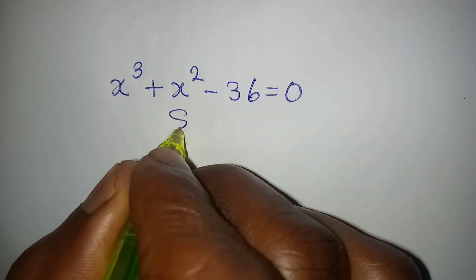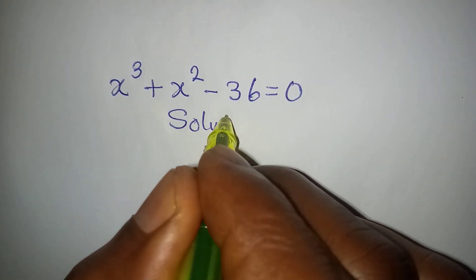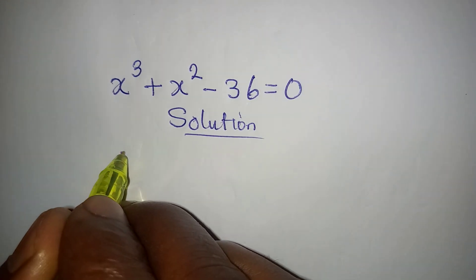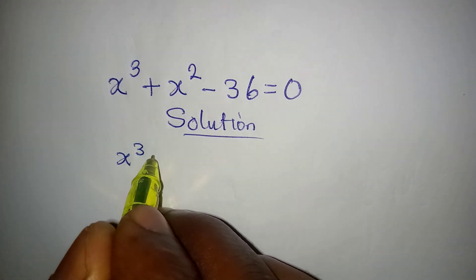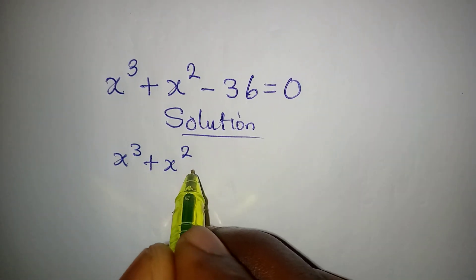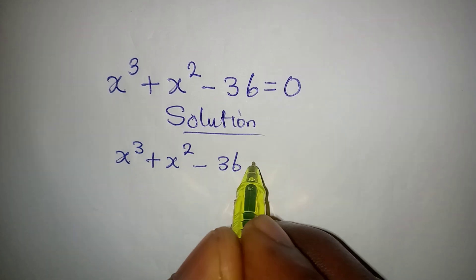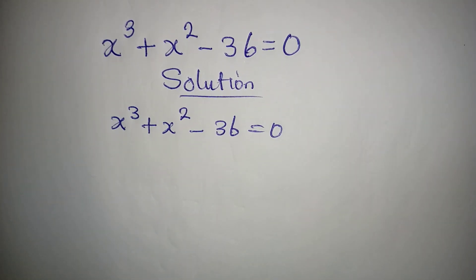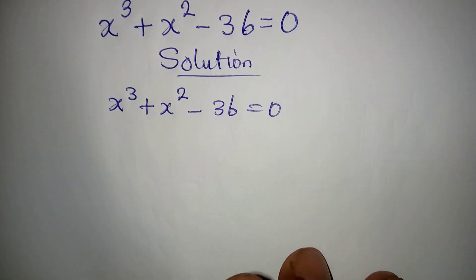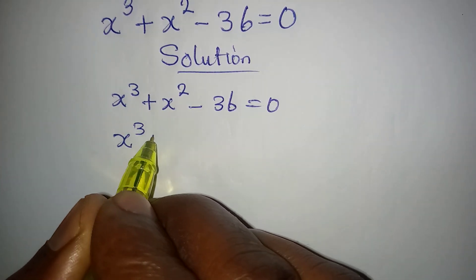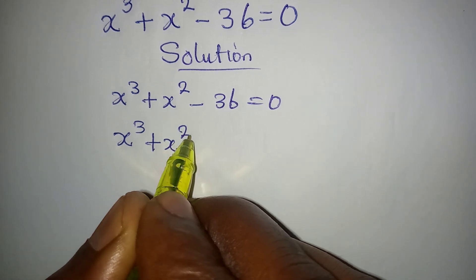Hello everyone, let's provide the solution to this problem: x to the power of 3 plus x to the power of 2 minus 36 equals 0. We are going to solve this problem completely, meaning we should bring out all the solutions. We have x to the power of 3 plus x to the power of 2.